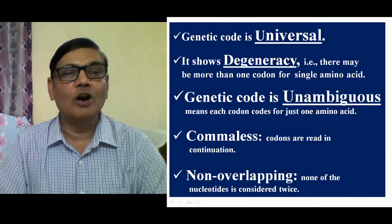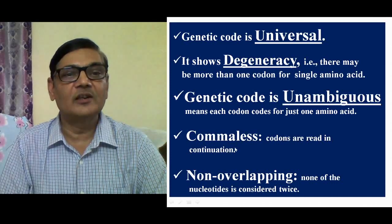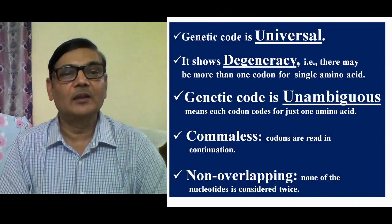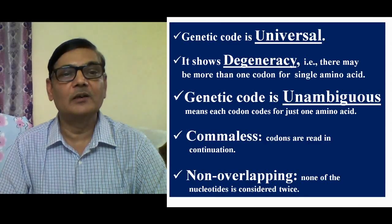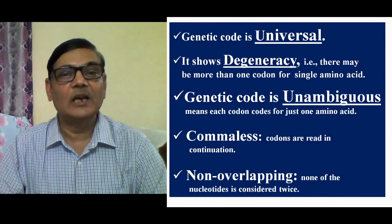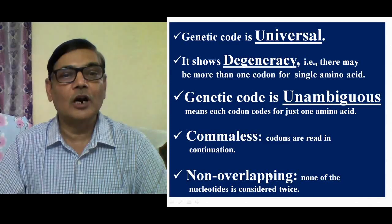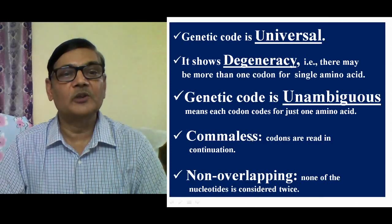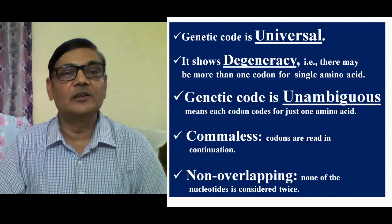The genetic code is also comma-less, meaning codons are read in continuation. If three letters make a codon, then exactly the next three letters make another codon — there is no gap. None of the nucleotides is considered as a gap. It also happens to be non-overlapping, meaning none of the nucleotides is counted twice — a letter used in one codon is not reused in an adjacent codon.